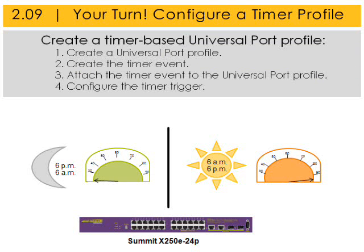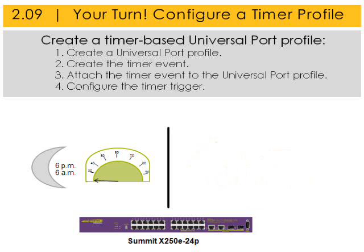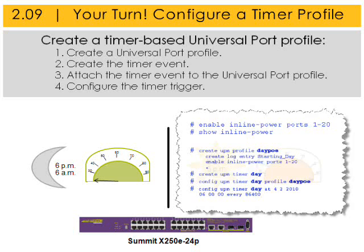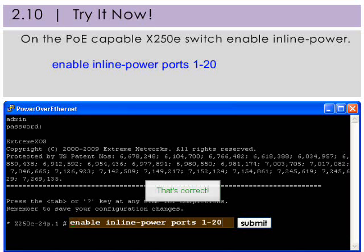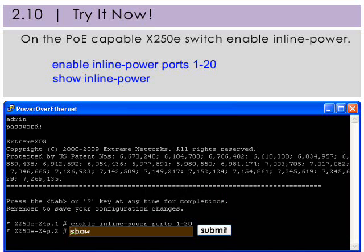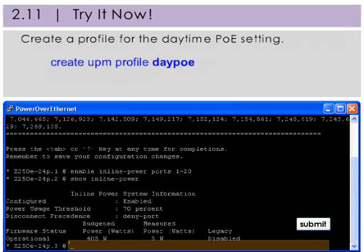Now it's your turn. You're going to create a timer-based Universal Port profile for the day. Here's what you're going to do at a high level: create the UPM profile, create the timer event, attach the timer event to the UPM profile, and then configure the timer trigger. On the Power over Ethernet-capable Summit X250e switch, enable inline power to ports 1 through 20, then use the show command to confirm inline power has been enabled.